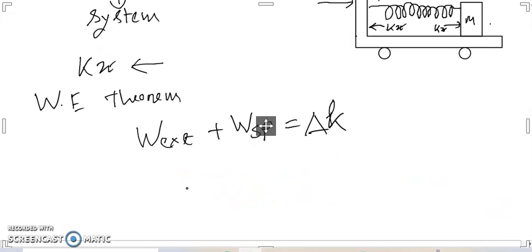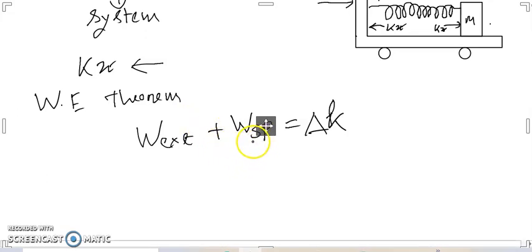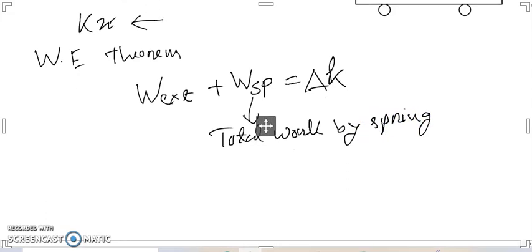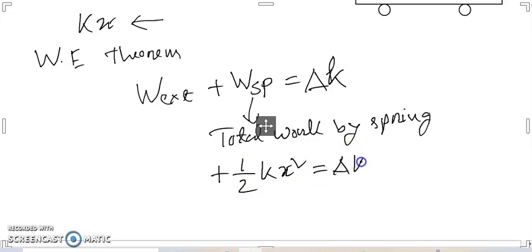The total work done by the spring on the system, W_spring, is equal to minus half k x squared.